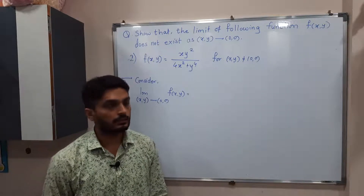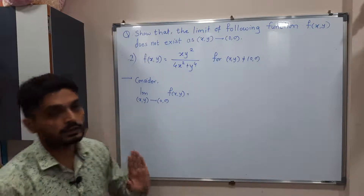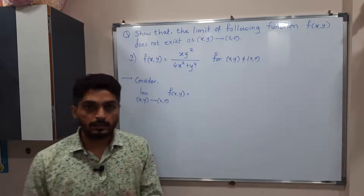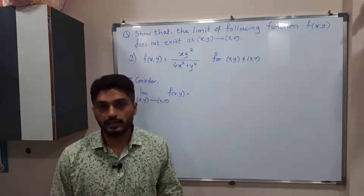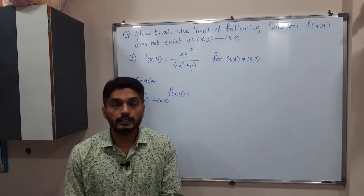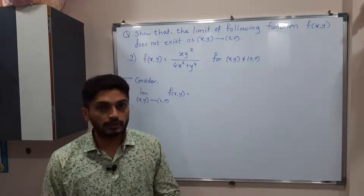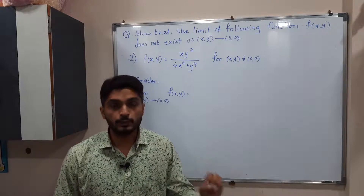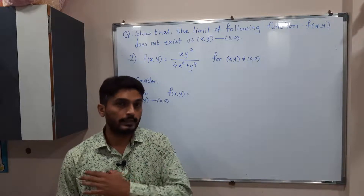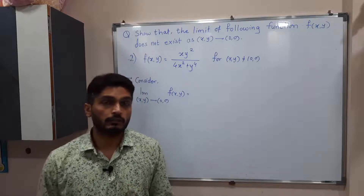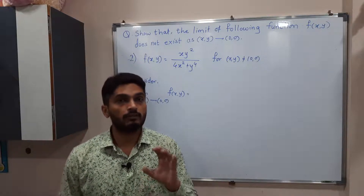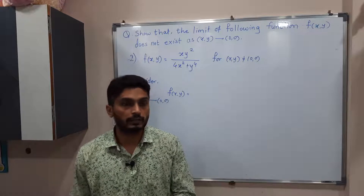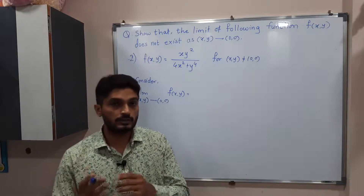Let us consider the second example. In this example, a function is given and the definition is valid only for (x,y) not equal to (0,0). Our target is the same — we have to prove that the limit does not exist. The technique is: we start to solve the limit, consider a particular path or substitution, remove x and y from the expression, express everything in terms of m only, and then for different values of m we get different limiting values, and finally we conclude the limit does not exist.